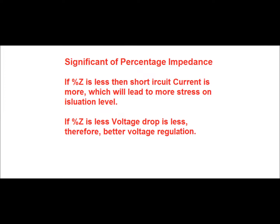What is the significance of percentage impedance of a power transformer? If the percentage impedance is less, the short circuit current will be more, which will produce more stress in the insulation of the power transformer — this is a negative factor. On the other hand, if percentage impedance is lower, it will reduce the voltage drop in the transformer winding, which will facilitate better voltage regulation — a positive factor. Therefore, the percentage impedance must be precisely selected to maintain a proper balance between fault level and voltage regulation.